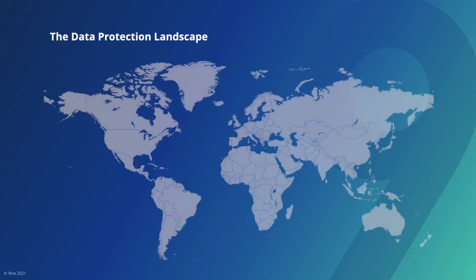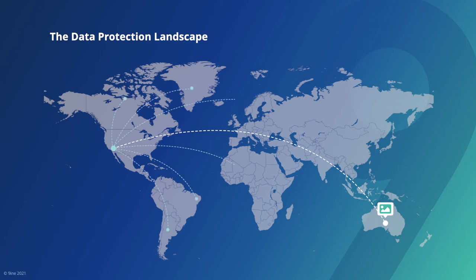The availability of information and ease of transfer has changed dramatically over recent decades. Individuals' personal data is moving to and from countries in ways people don't often realize or understand. For example, a person posting a social network picture can mean that information is transferred from their computer or phone to a server in California immediately. From there, it may be disseminated to hundreds of users in countries worldwide within seconds. Each person who likes the picture can share or resend it to many others with little or no restrictions.